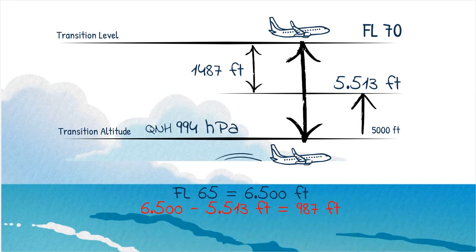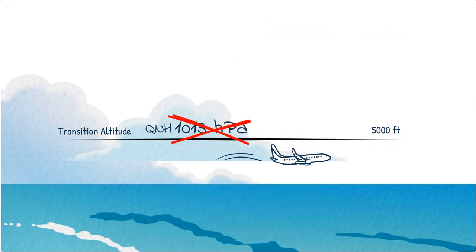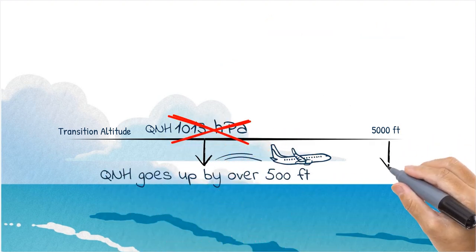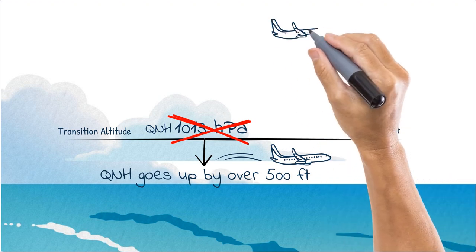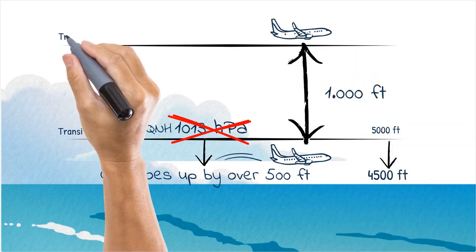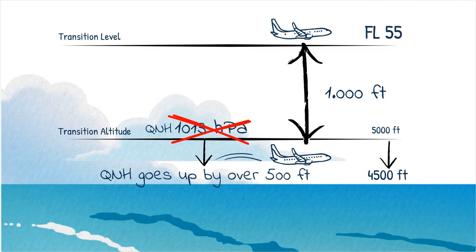This whole thing works the other way around as well. If the QNH goes high up so much that your pressure difference altitude is more than 500 feet, you will achieve the 1,000 feet vertical separation with the traffic flying on flight levels at a transition level 55.